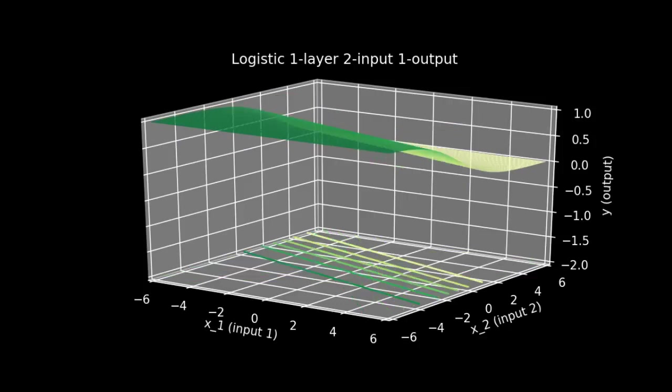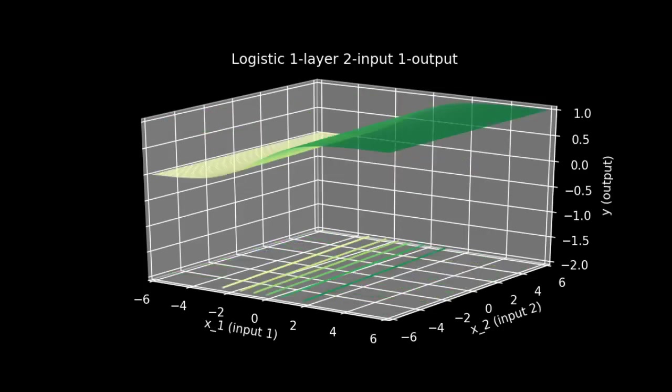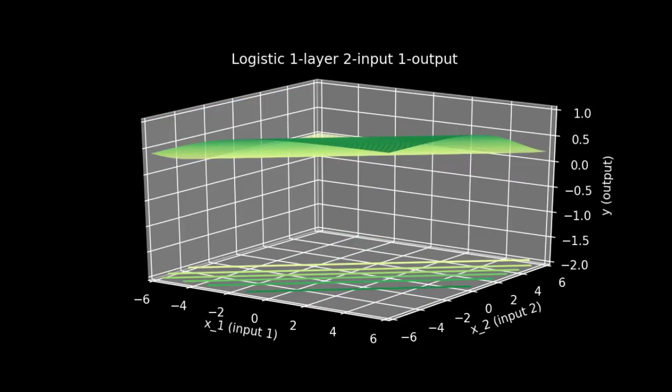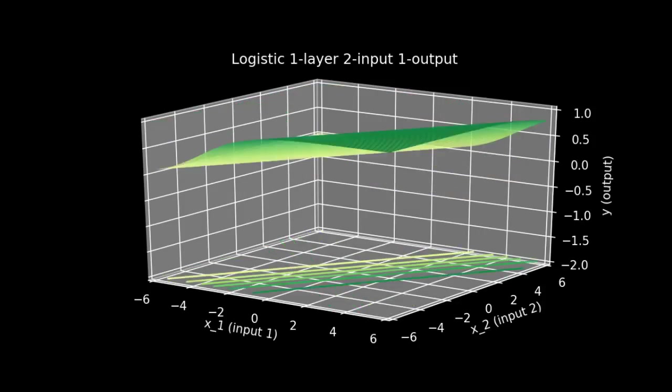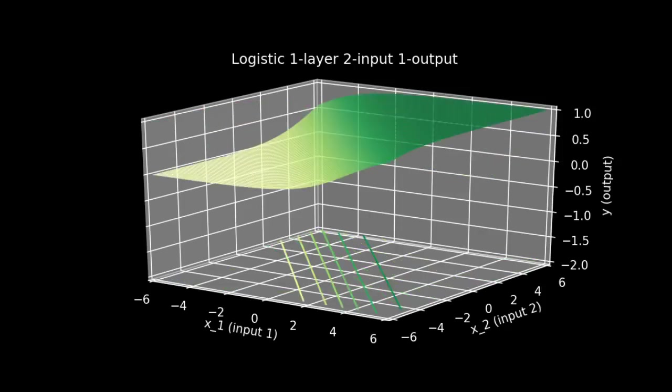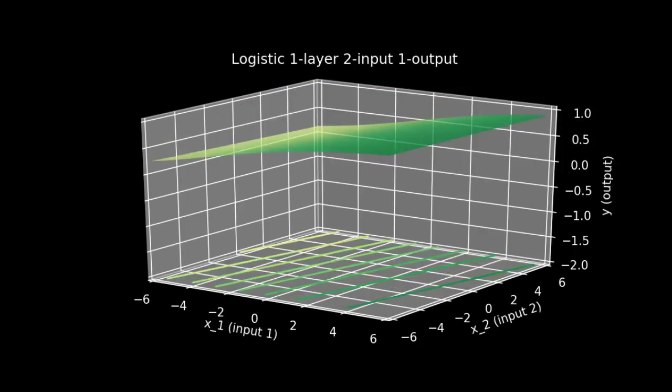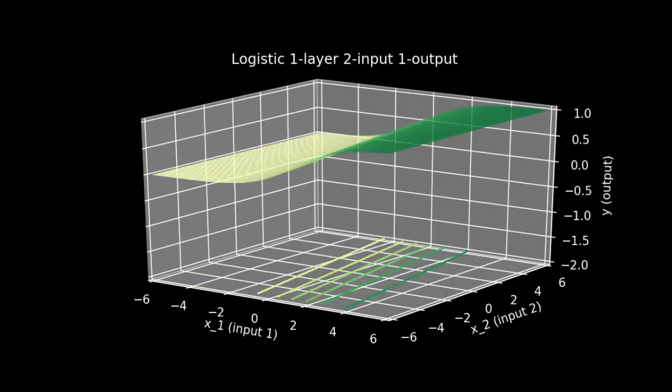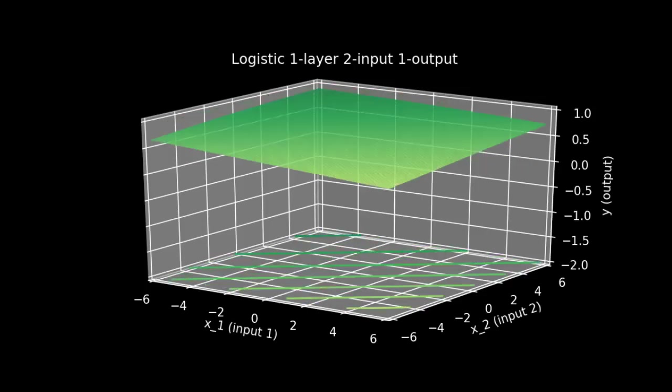More importantly, if you look at the contour lines projected down onto the floor of the plot, you can see that they are all perfectly straight. The result of this is that any threshold we choose for doing classification will split our input space up into two halves, with the divider being a straight line. This is why logistic regression is described as a linear classifier. Whatever the number of inputs you have, whatever dimensional space you're working in, logistic regression will always split it into two halves, using a line or a plane or a hyperplane of the appropriate dimensions.